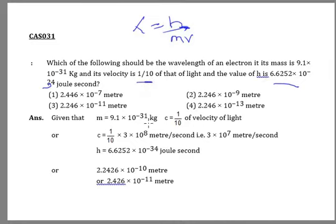Now how do we find this? Here we have mass, which is 9.1 × 10^-31 kg. The velocity value is 1/10th of that of light, and the speed of light is 3 × 10^8, so 1/10 × 3 × 10^8, which is 3 × 10^7 meters per second. This is our velocity. The h value given is 6.6252 × 10^-34 joule per second.